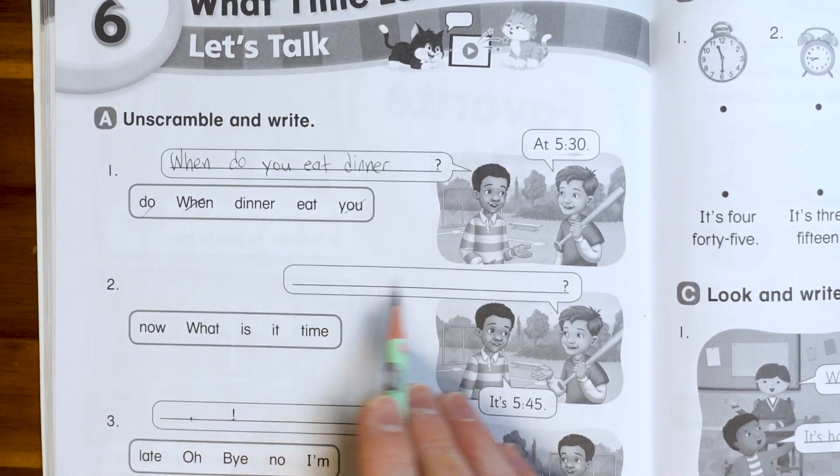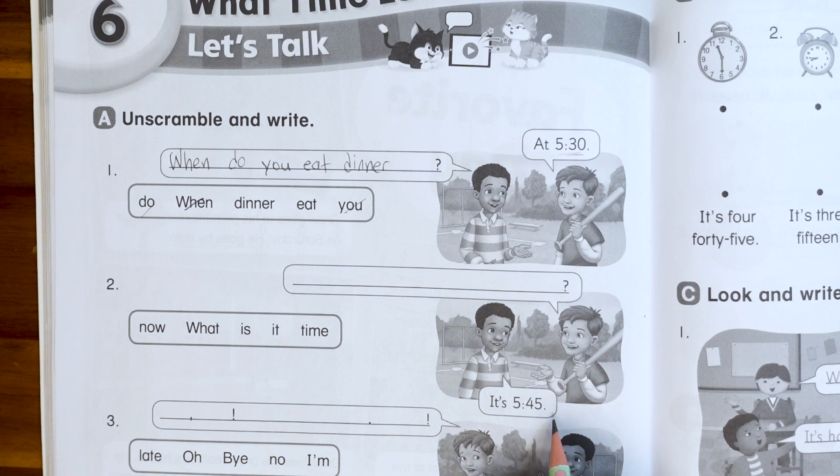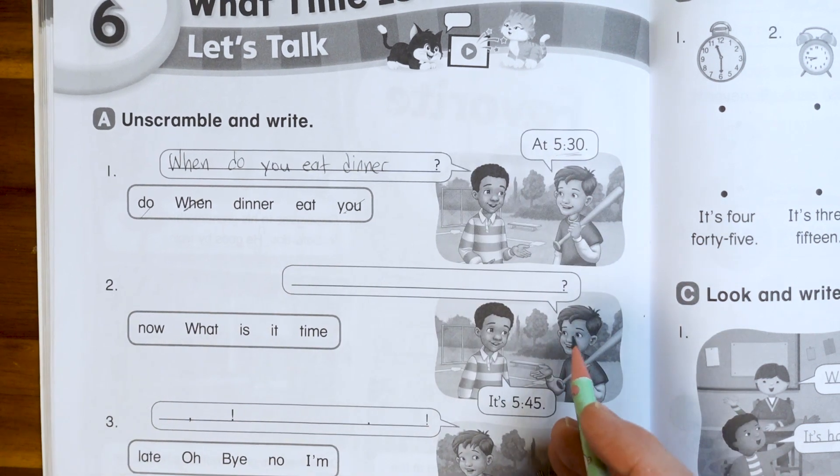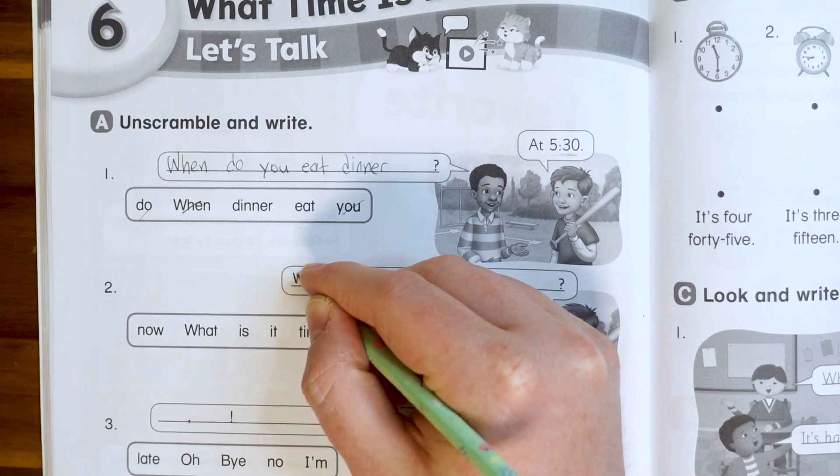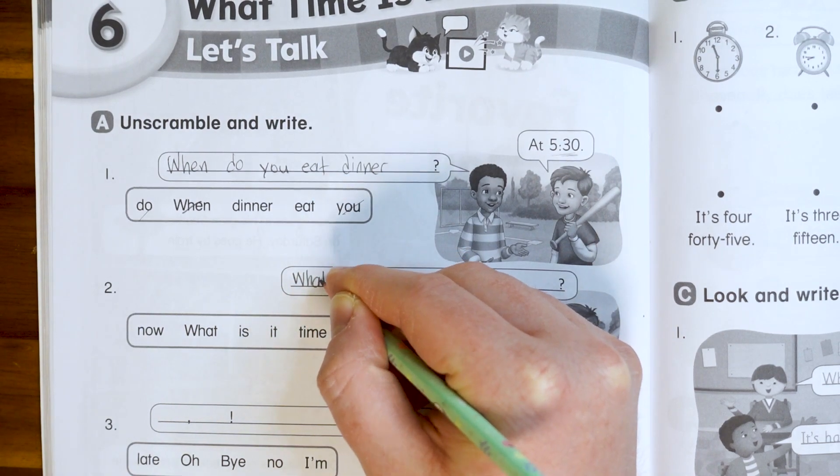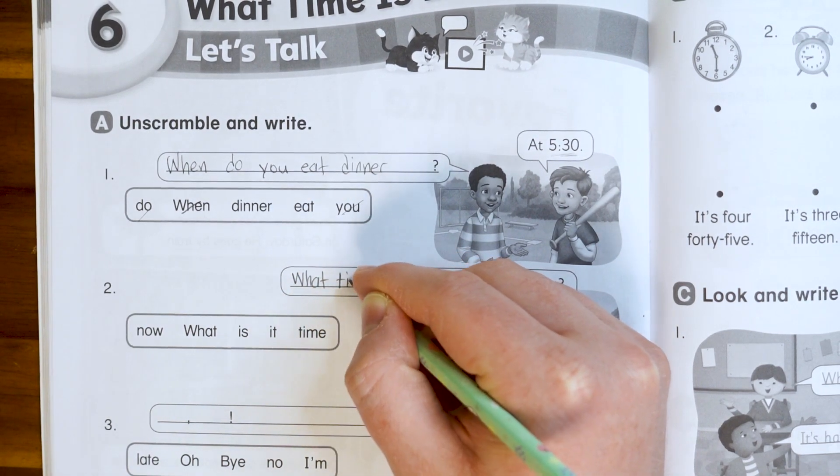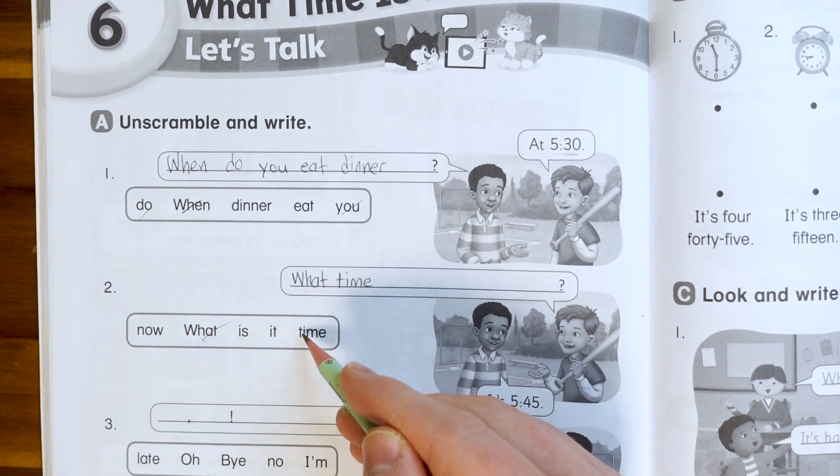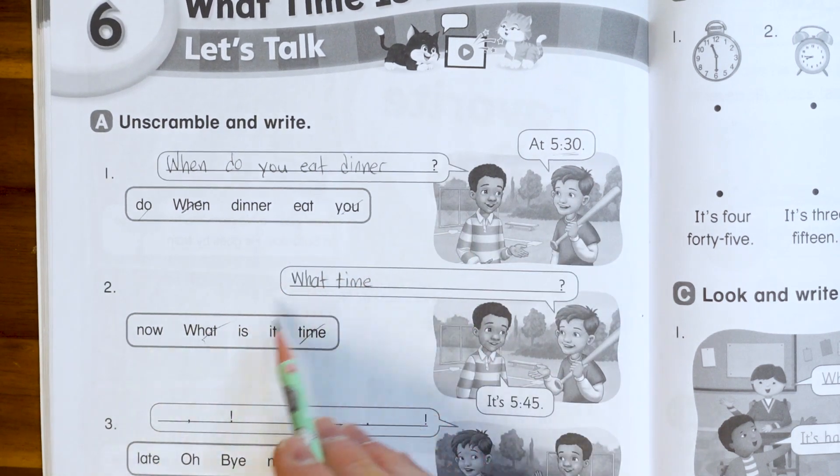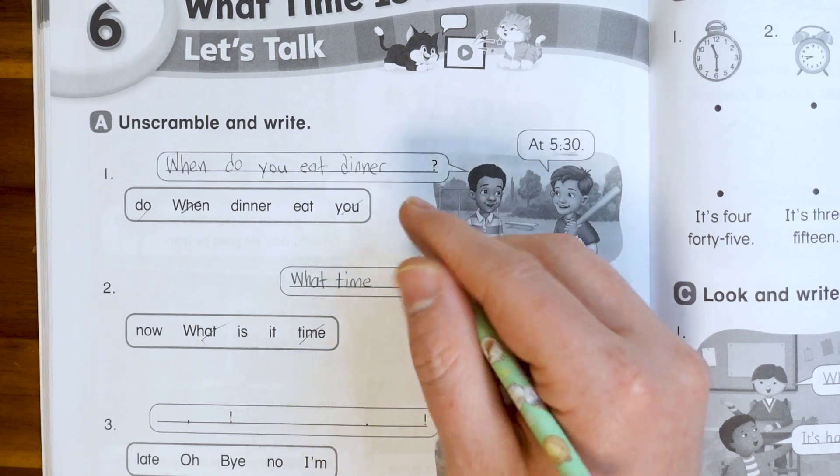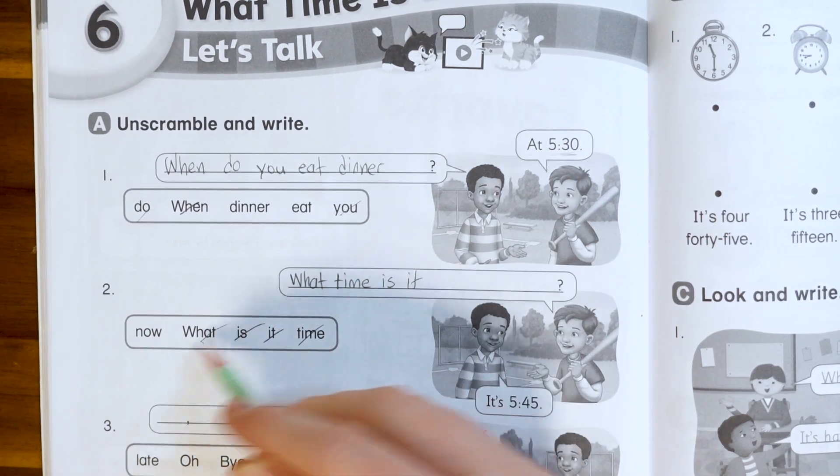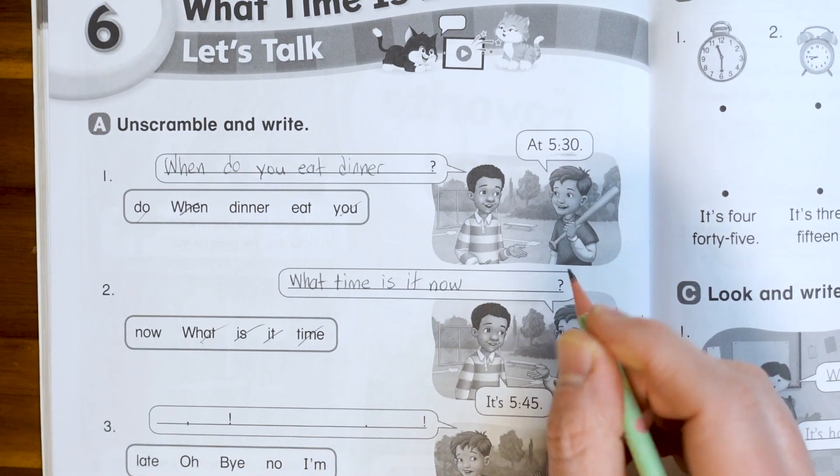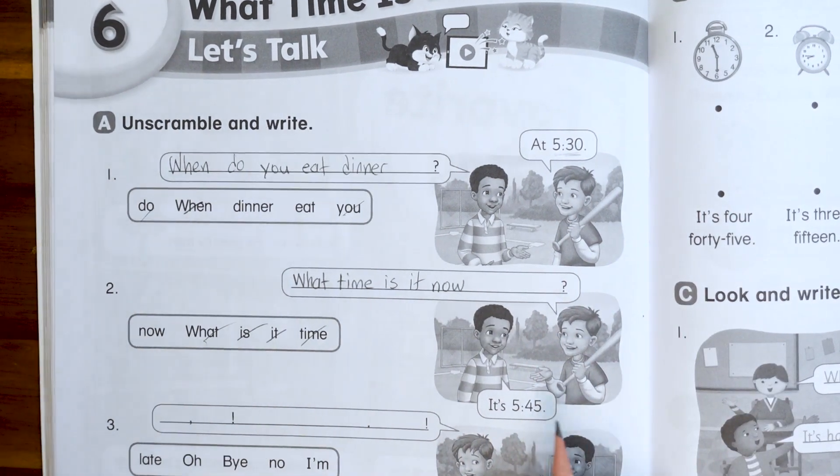Scott says, and Andy says it's 5:45. So again, we're going to try to get a question word first. Here's a question word. What time? What time now? What time is it now? It's 5:45.